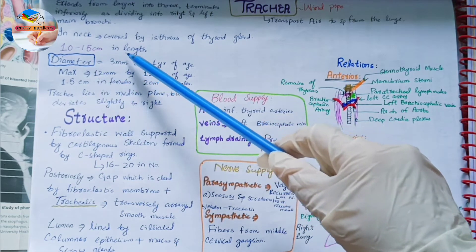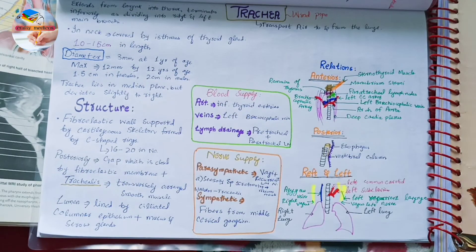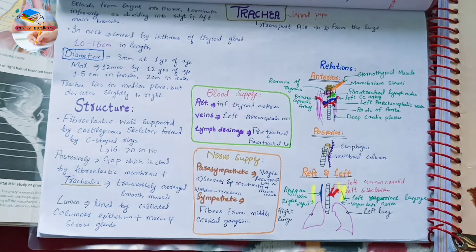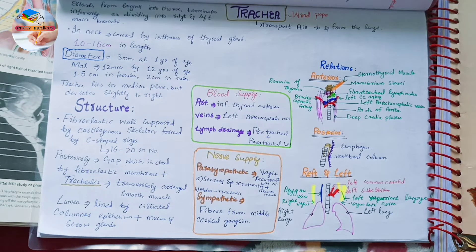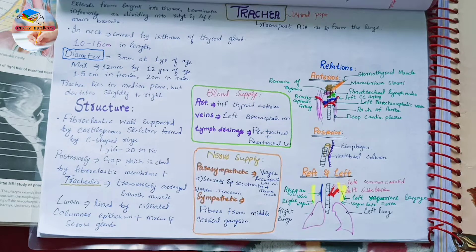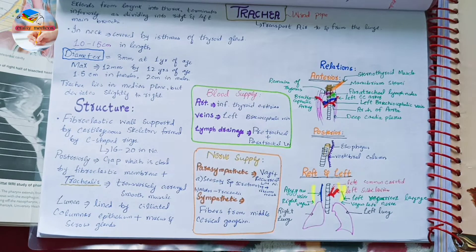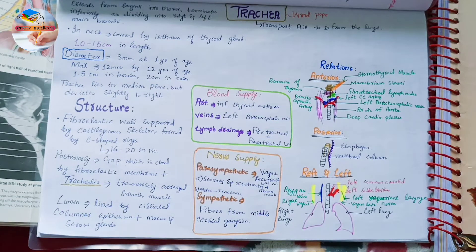In the neck it is covered by the isthmus of thyroid gland which acts as a shield. About 10 to 15 centimeters in length and its external diameter measures about 2 centimeters in males and about 1.5 centimeters in females. The lumen is smaller in the living than in the cadaver, about 3 millimeters at one year of age.